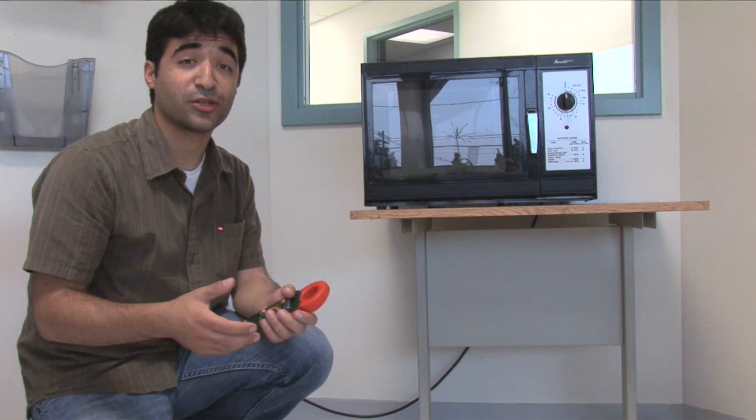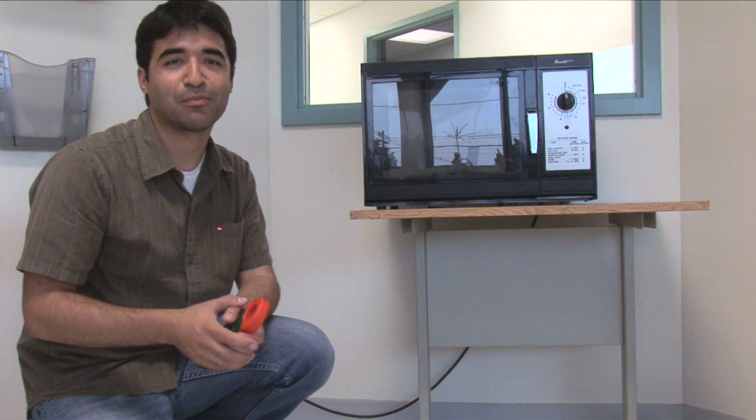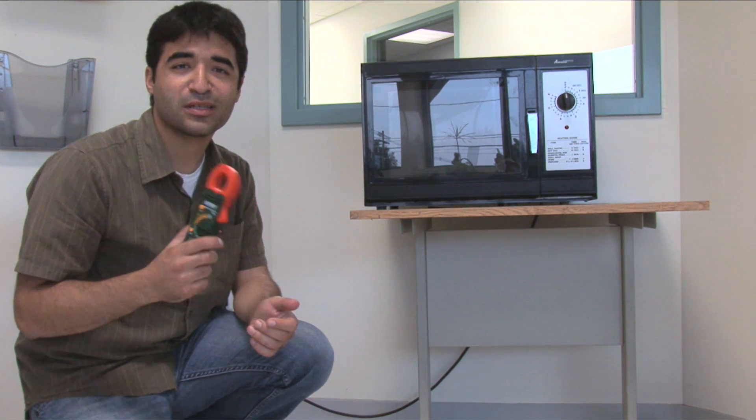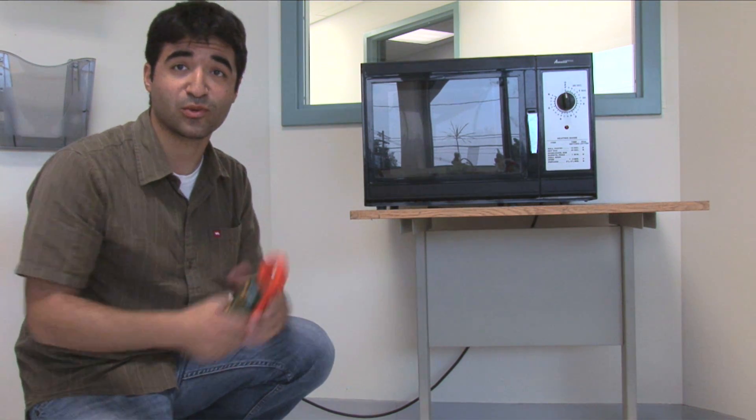The clamp meter is a fairly easy way to measure current on individual loads, among other applications. However, a common mistake occurs when you clamp straight onto an individual load.